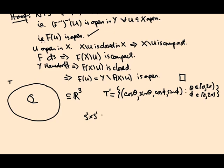So first of all I need a map, which is a continuous bijection from S1 times S1 to, say, T prime. And that map is going to be the one that sends e to the i theta, comma, e to the i phi to cos theta, sine theta, cos phi, sine phi.